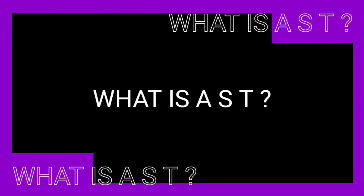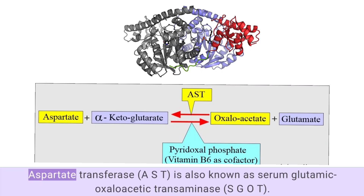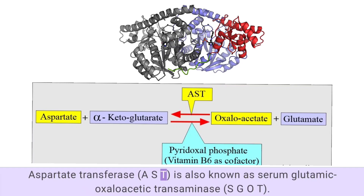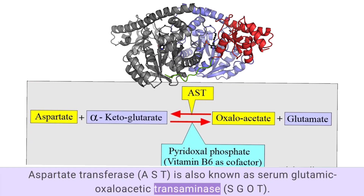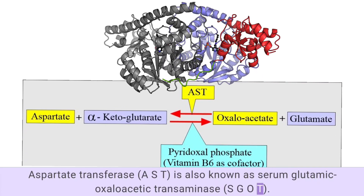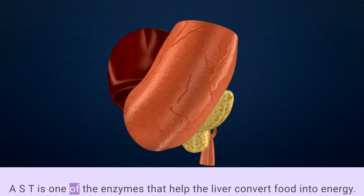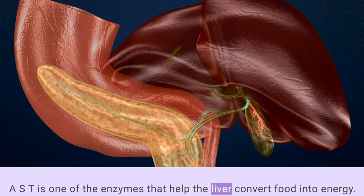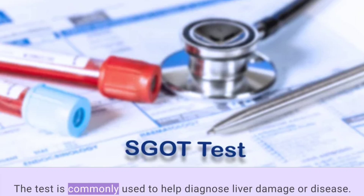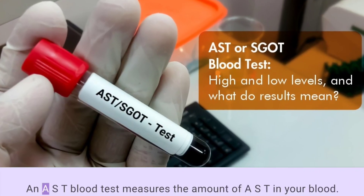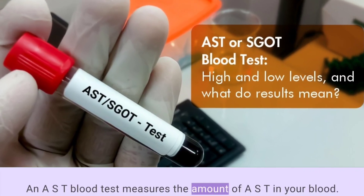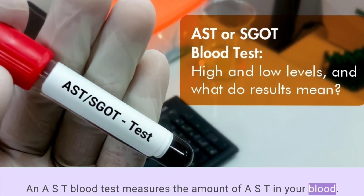What is AST? Aspartate transferase, AST, is also known as serum glutamic oxaloacetic transaminase, SGOT. AST is one of the enzymes that help the liver convert food into energy. The test is commonly used to help diagnose liver damage or disease. An AST blood test measures the amount of AST in your blood.